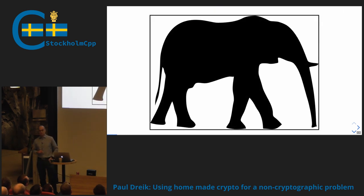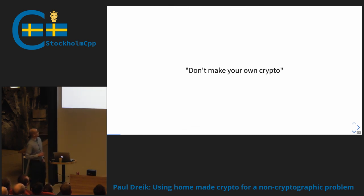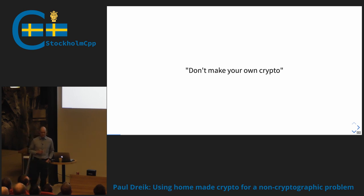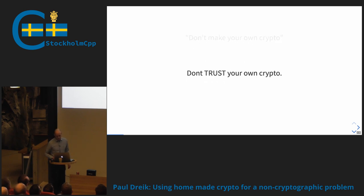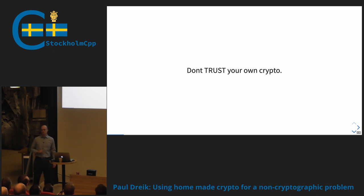Let me introduce you to the elephant in the room. Everyone says don't make your own crypto. Why do they say that? It's because it's very easy to make crypto that you yourself can't break, but it's extremely difficult to make crypto no one else can break, especially considering large resources and long periods of time. But crypto is fun, so I think we should revise this and say: don't trust your own crypto. Of course we should make crypto.